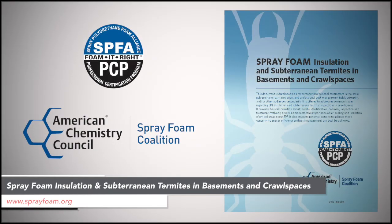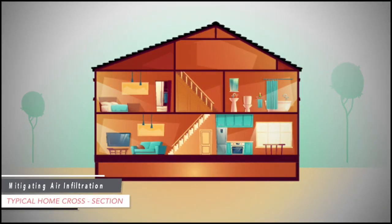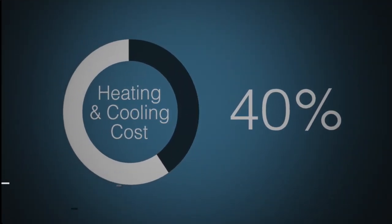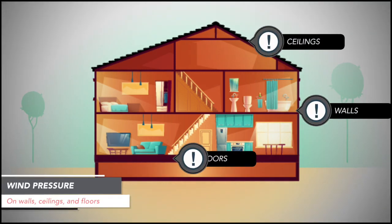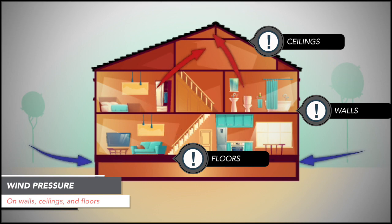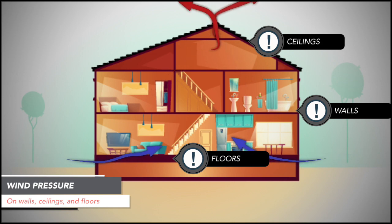Spray foam insulation and subterranean termites in basements and crawl spaces. A comfortable and efficient home must keep the inside air in and the outside air out. According to the US Department of Energy, unwanted air leakage can account for up to 40% of the cost of heating and cooling a home. The walls, ceilings, and floors we build are constantly subjected to air pressure differences, resulting in outside air infiltrating into the building enclosure while inside air is exfiltrated to the exterior. These pressure differences can be caused by wind loads, which can vary by height, exposure, and site conditions. Other sources of air infiltration and exfiltration are HVAC systems and exhaust fans, which can be mitigated through proper location and design of the HVAC system.